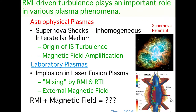The RMI-driven turbulence plays an important role in various plasma phenomena. One example is astrophysical plasma. Astrophysical plasma is basically magnetized, and the interaction between the supernova shock and the inhomogeneous interstellar medium is quite similar to the Richtmyer-Meshkov instability, which can give an origin of the interstellar turbulence and help the amplification of the interstellar magnetic field.